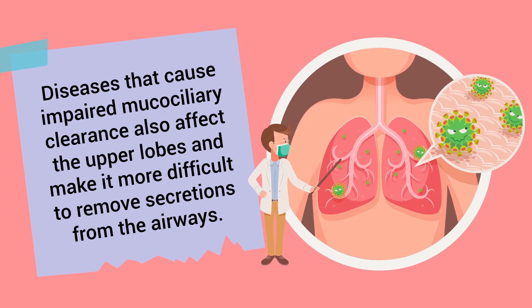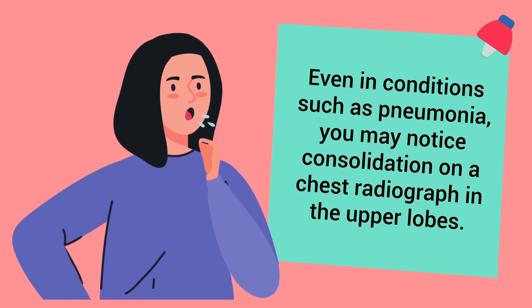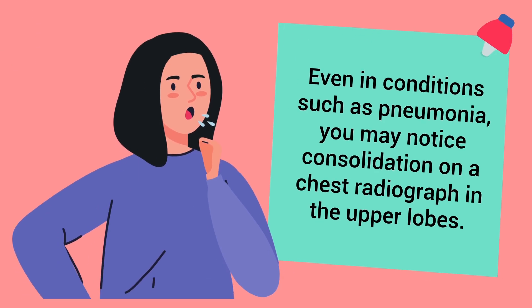Diseases that cause impaired mucociliary clearance also affect the upper lobes, making it more difficult to remove secretions from the airways. Even in conditions such as pneumonia, you may notice consolidation on a chest radiograph in the upper lobes.